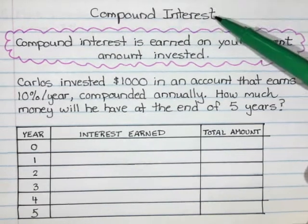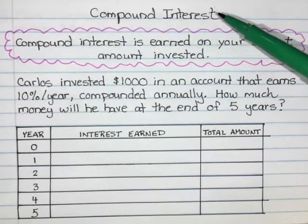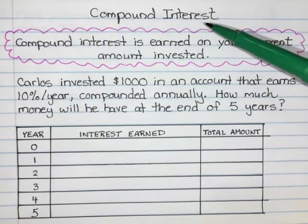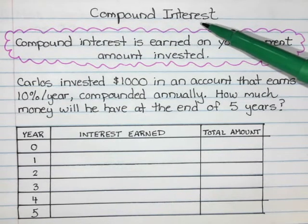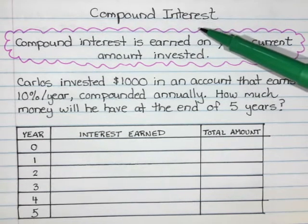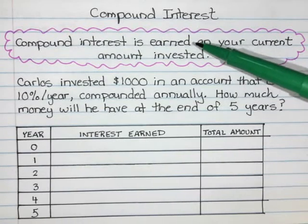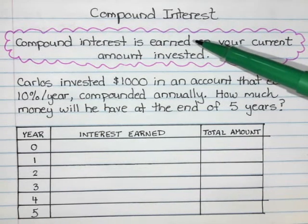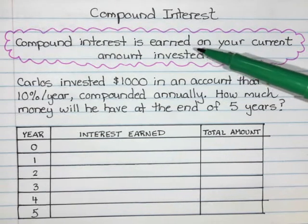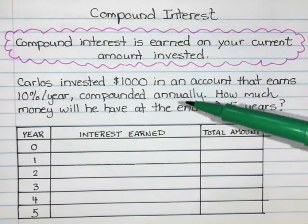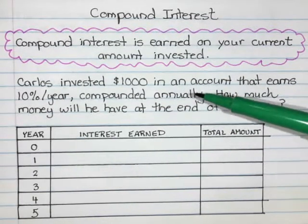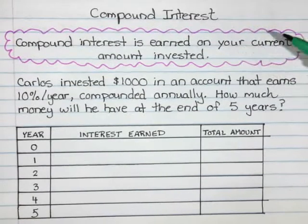Today we're going to be talking about compound interest. Compound interest is interest that is earned on your current balance, or how much money you currently have in an account. With simple interest, you only earn interest on the original investment. But with compound interest, you earn interest on your original investment plus interest on top of the interest you've already been earning.